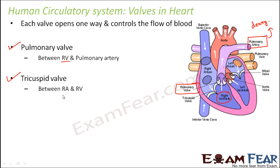The next type of valve is the tricuspid valve. It is present between the right auricle and the right ventricle. When it opens, blood can flow from the right auricle to the right ventricle. All valves allow blood to flow in one specific direction — for example, the tricuspid valve allows flow only from right auricle to right ventricle, never in the vice versa direction.